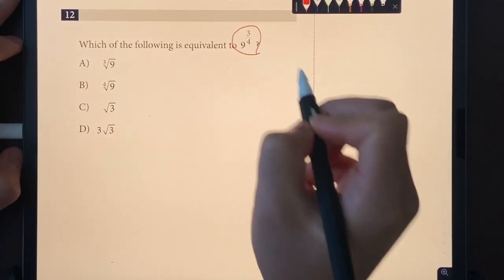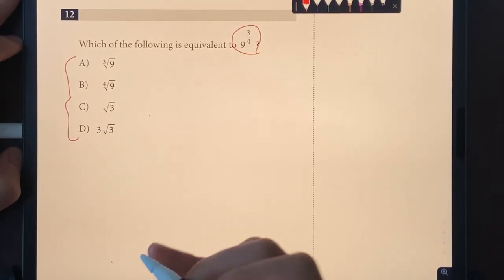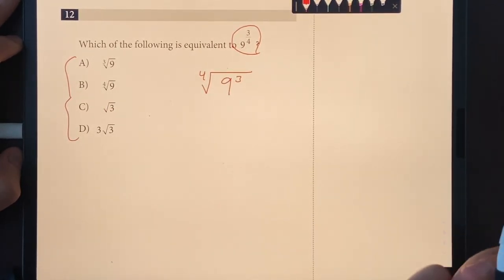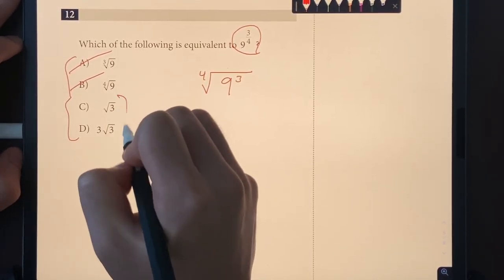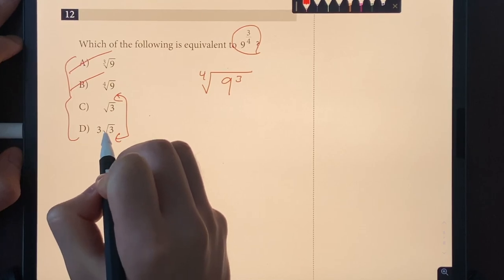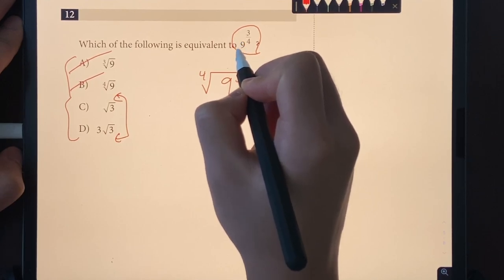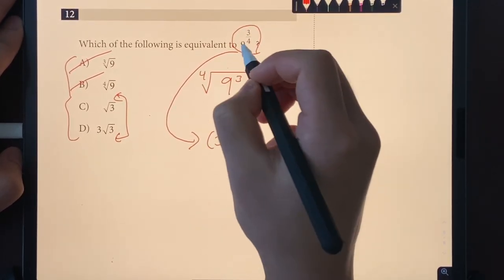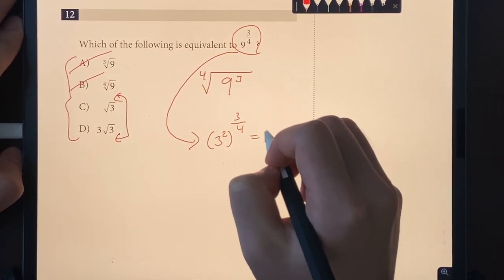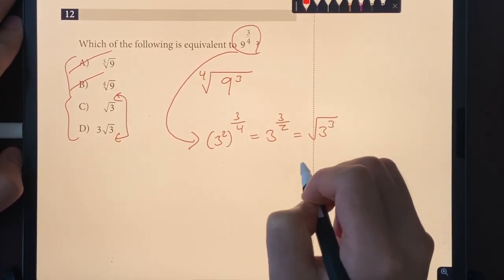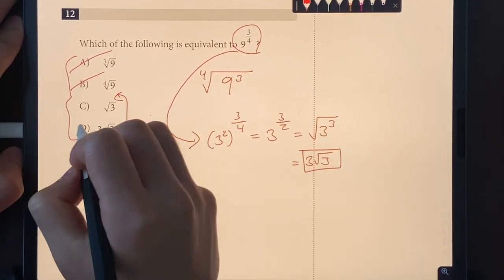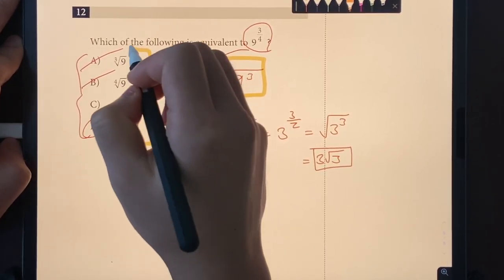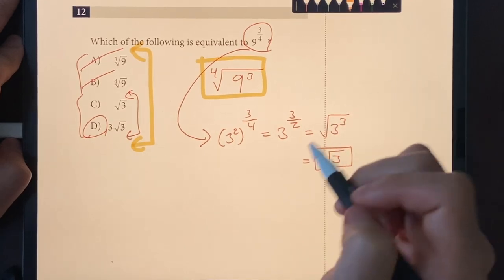Number twelve: which of the following is equivalent to 9^(3/4)? Choices A and B don't match, so we rewrite: 9^(3/4) = (3²)^(3/4) = 3^(3/2) = √(3³) = √27 = 3√3. The answer is choice D. Tip: when stuck mid-calculation, look at the answer choices to find the direction you need to go next.